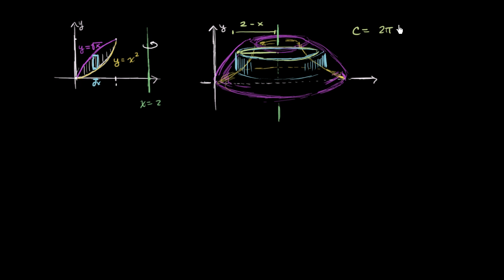And then if we want the surface area of the outside of our shell, so the area is going to be the circumference, 2 pi times 2 minus x, times the height of each shell. Now, what is the height of each shell?